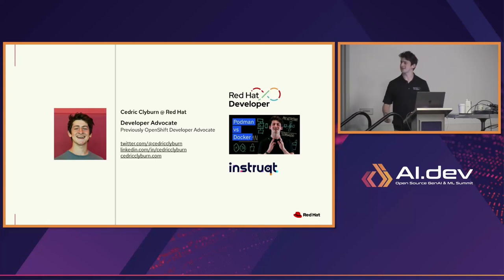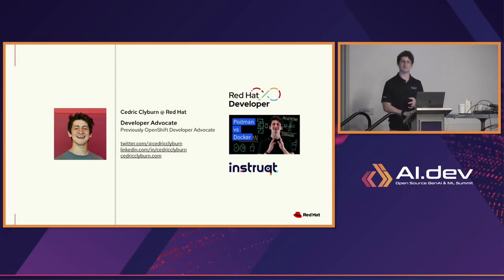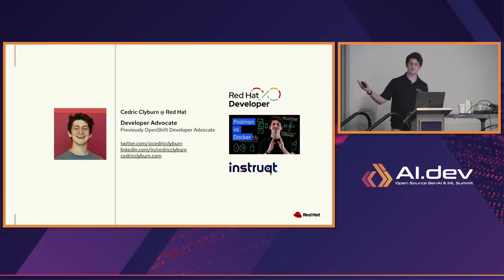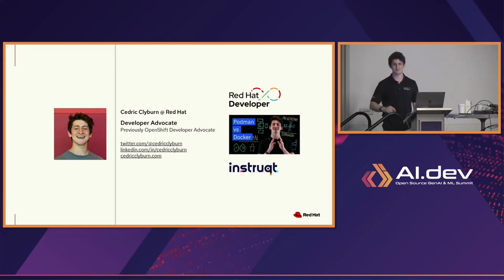Before we begin, I want to say a little bit about myself. I'm a developer advocate at Red Hat, formerly an OpenShift developer advocate with a lot of experience in Kubernetes. I'm from Red Hat Developers specifically, where I create blogs and cheat sheets. I'm working on my first book about developer tools and technologies you can use with Kubernetes for CI/CD — things like Tekton and Argo CD. I also create interactive labs with Instruct.